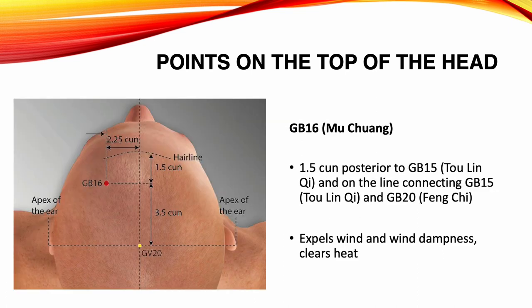Gallbladder 16, Mu Chuang. Location: 1.5 Sun posterior to Gallbladder 15, on the line connecting Gallbladder 15 and Gallbladder 20. Functions: expels wind and wind dampness, clears heat. Indications: headache, eye pain, nasal congestion, facial edema, convulsions.